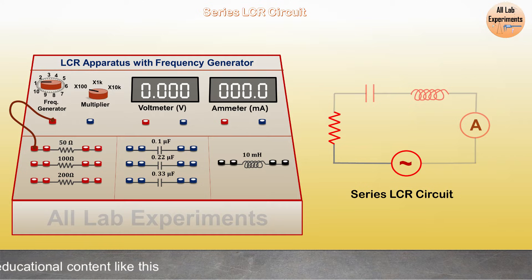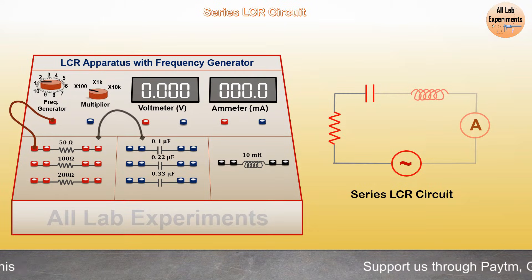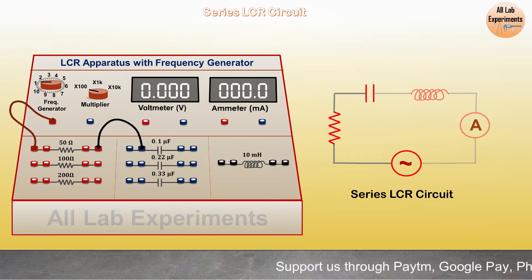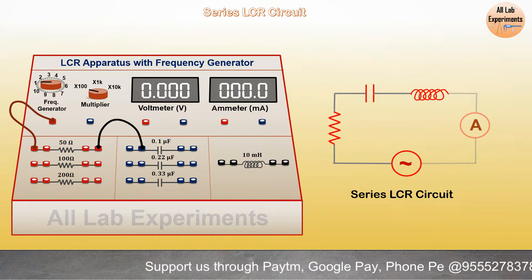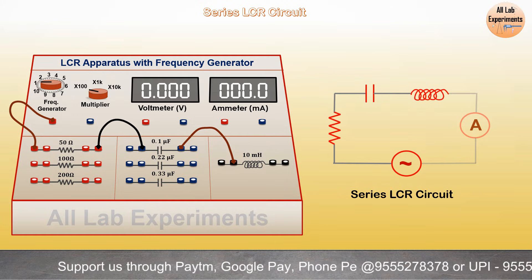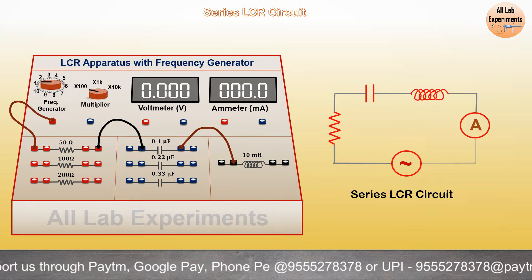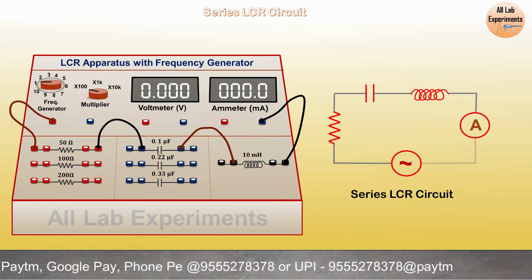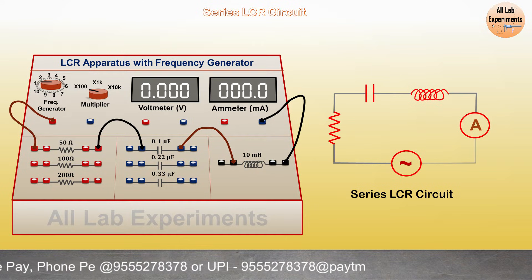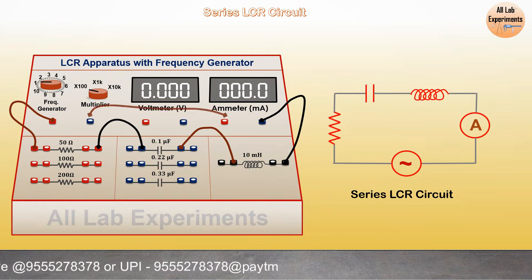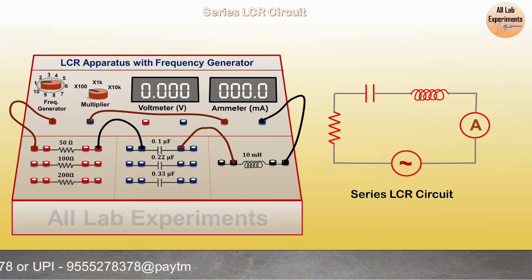Now connect the other end of the resistor with one end of the capacitor. Similarly we can connect the capacitor's end with the inductor's end, and then other end of the inductor with the ammeter, and now from ammeter to frequency generator back again. This makes a closed loop.